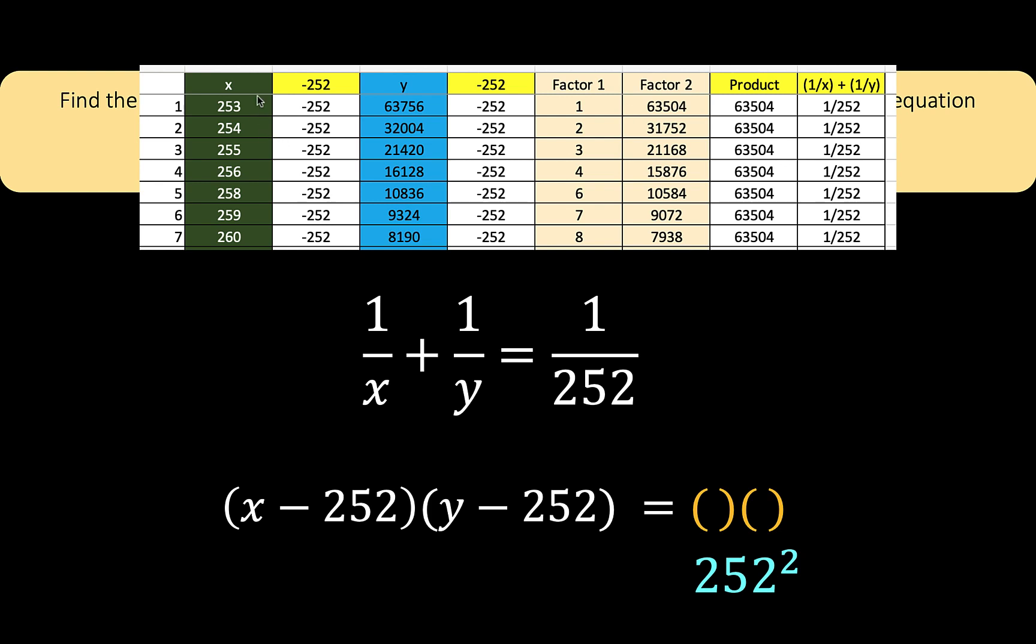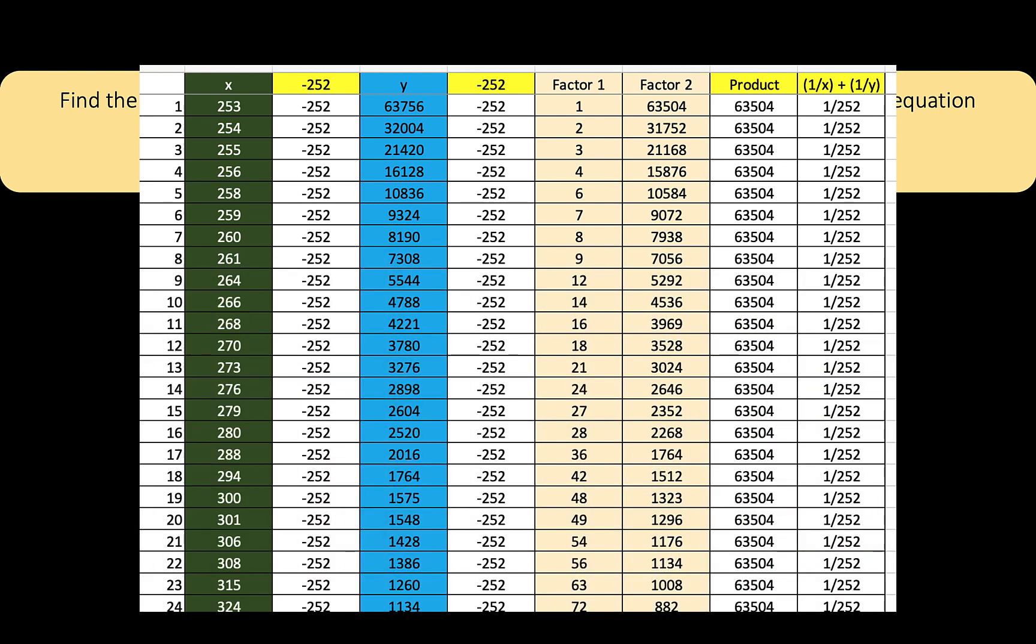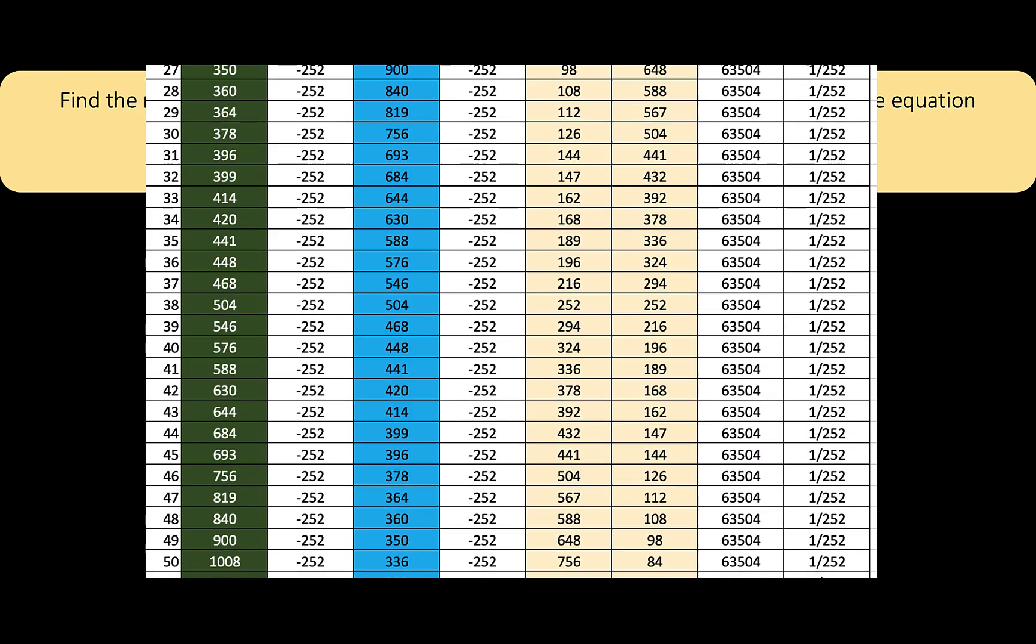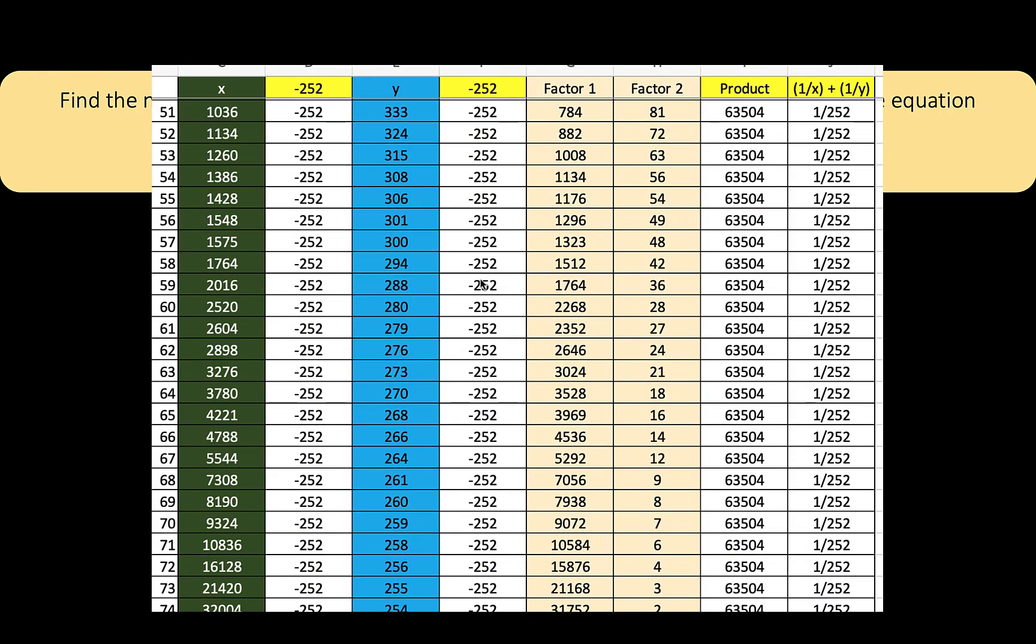We can check that 1 over 253 plus 1 over 63,756 equals 1 over 252. Here are the first 25 solutions to this Diophantine equation, and here is the other 25, and here is the other 25 to complete the 75 ordered pairs x, y that satisfy our given equation.